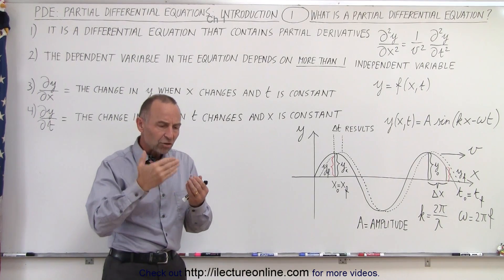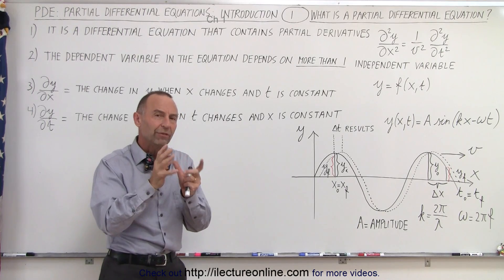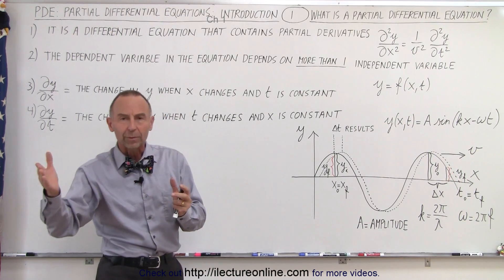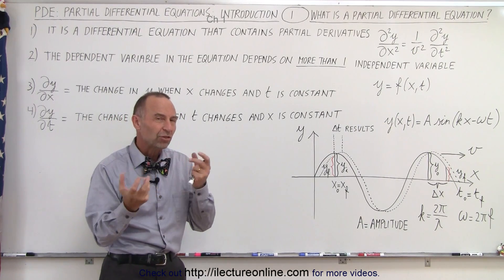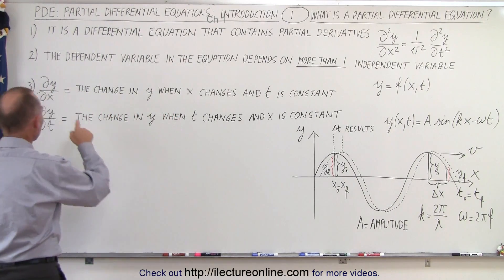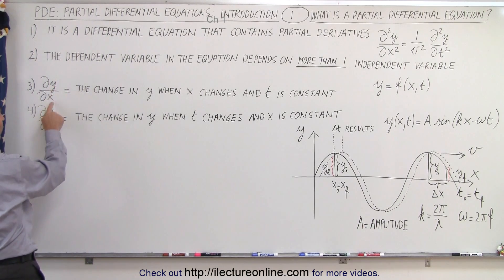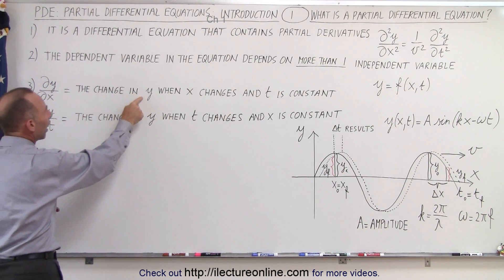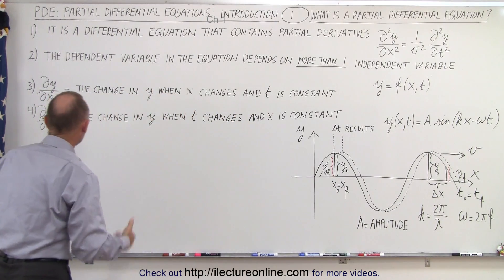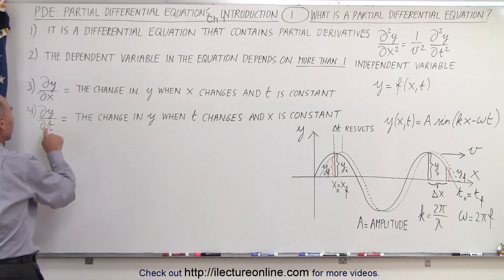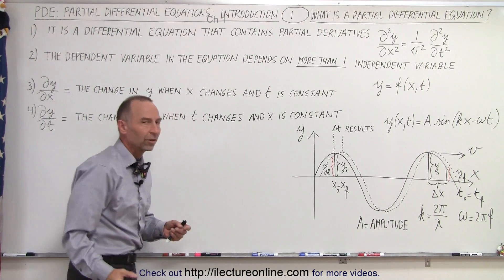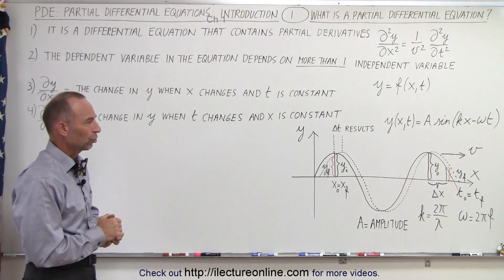What that means is that we can change one variable and keep the other constant and see how the function changes, and then change the other variable while keeping the first one constant. When we take the partial derivative of y with respect to x, it means the change in y when x changes and t is kept constant. Similarly, the partial derivative of y with respect to t is the change in y when t changes and x is kept constant.